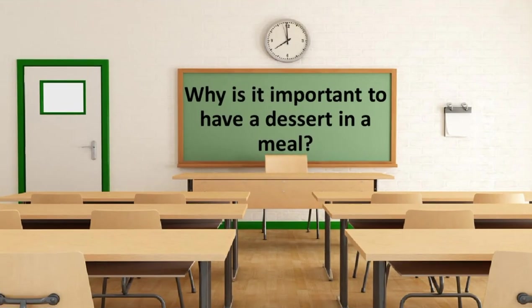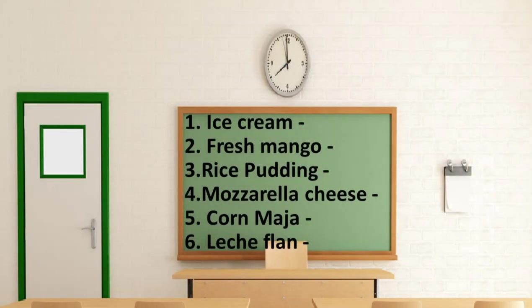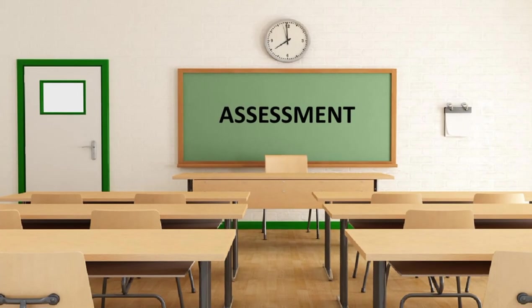Why is it important to have a dessert in a meal? Dessert has many importances, but one thing is for sure — dessert balances out a meal and gives closure to the meal. What can you say about dessert? Now, let's classify the following according to the types of desserts. Same instructions — answer on a piece of paper then send through my account. Number one: ice cream. Number two: fresh mango. Number three: rice pudding. Number four: mozzarella cheese. Number five: cornmeal. And number six: leche flan. In the assessment, write only the letter and send to my messenger account.